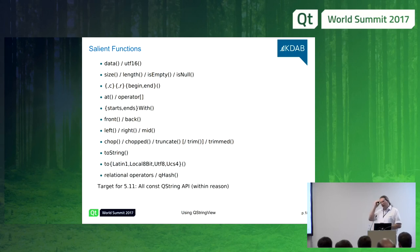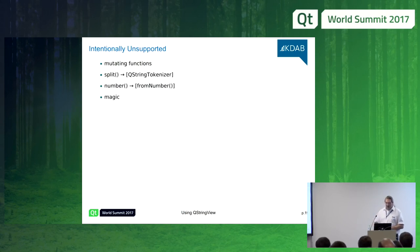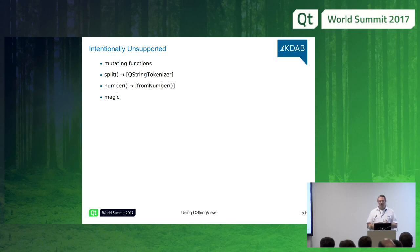The target for Qt 5.11 is to complete this so that everything reasonable from QString applies to QStringView as well. What's intentionally not supported: mutating functions, split (which will be replaced by a QStringTokenizer), and number-to-string and string-to-number conversion APIs, which will get a new non-allocating design.